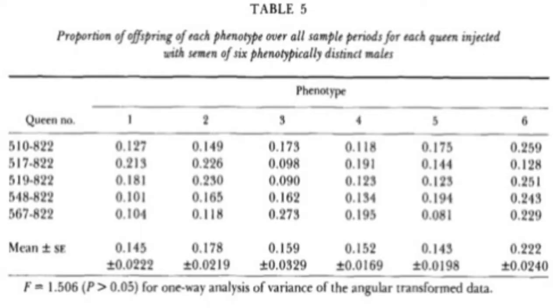Five trials are taken in this study. The proportions of phenotypes among their offspring are counted statistically. As the data shows, the p-value is larger than 0.05, which means there is a significant difference in the data. Therefore, there is a low genetic relationship — in other words, there is genetic variation among the offspring by different phenotypically distinct males.